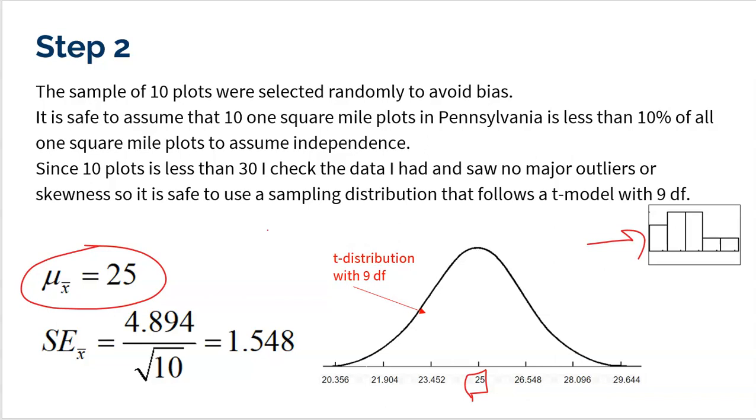All right, so now comes my standard error, and this is actually why I have to use a t-model. Taking the 4.894, the standard deviation of my sample, dividing by the square root of 10, get 1.548. So I went up, up, up, 1, 2, 3, down, down, down, 1, 2, 3 standard errors.